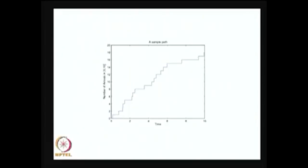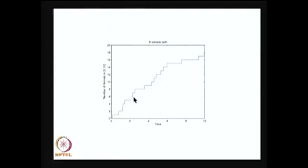The Poisson process sample path has 1-unit step increments — at any time, there is no way the system can move forward by 2 steps. Even in a very small interval of time, the system will move only 1 step. Therefore you can relate back to the assumptions: N(0) = 0; in a very small interval at most one event can take place; differences of random variables over non-overlapping intervals are independent; and increments are stationary.